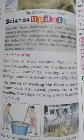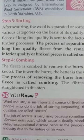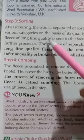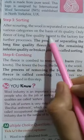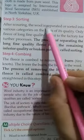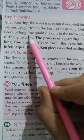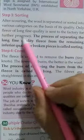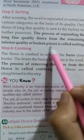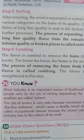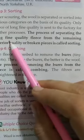The next step is sorting. Sorting means separating the fine quality fleece from the inferior quality. After scouring, the wool is separated and sorted into various categories on the basis of its quality. Only the fleece of long fine quality is sent to the factory for further processing. The process of separating the long fine quality fleece from the remaining inferior quality or broken pieces is called sorting.